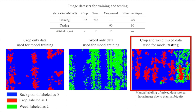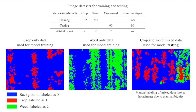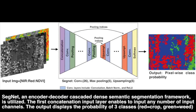On average, annotating one image takes about one hour, and we annotated 30 images for model testing. Considering aligned NIR, RED, and NDVI images, we have 90 testing images in total. In this project, we retained the original SegNet architecture, an encoder-decoder-cascaded dense semantic segmentation framework.